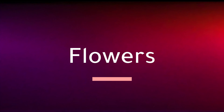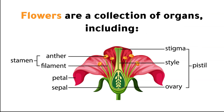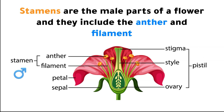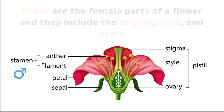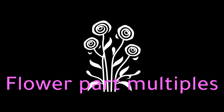Flowers are the reproductive structure of angiosperms. They are a collection of organs including sepals, petals, stamens, and pistils. Stamens are the male parts of a flower and they include the anther and filament. Pistils are the female parts of a flower and they include the stigma, style, and ovary.